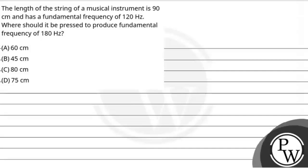Hello Bacho, let's read this question. The question says the length of the string of a musical instrument is 90 centimeter and has a fundamental frequency of 120 hertz. Where should it be pressed to produce fundamental frequency of 180 hertz? So the key concept of this question is fundamental frequency.